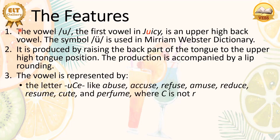The vowel is represented by several letters or letter combinations. The first is the letter combination U-consonant-E, like in 'abuse', 'accuse', 'reviews', 'amuse', 'reduce', 'resume', 'cute', and 'perfume'. Here, C is not the letter R. So we have the letter U, then a consonant such as S or Z, and then E. If we have this letter combination, we can expect that the pronunciation of the letter U is the /u/ sound, as in 'abuse', 'accuse', 'refuse', 'amuse', and 'reduce'.